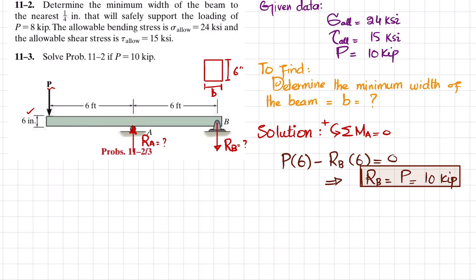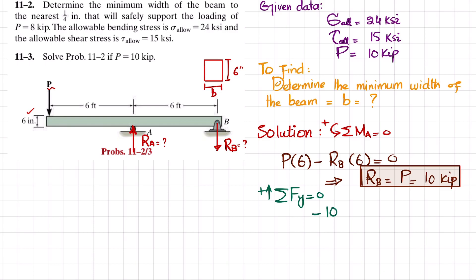Now we find Ra using the second equilibrium condition: the sum of all forces along the y-direction equals zero, with upward taken as positive. We have −P + Ra − Rb = 0, so −10 + Ra − 10 = 0, giving Ra = 20 kips.